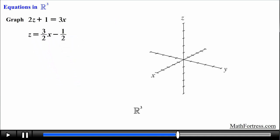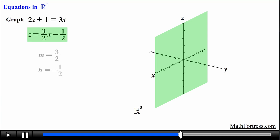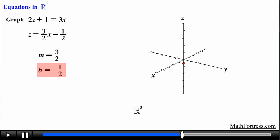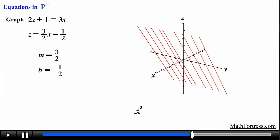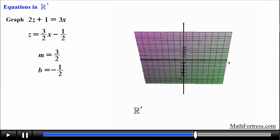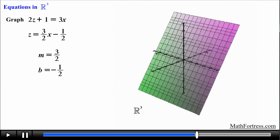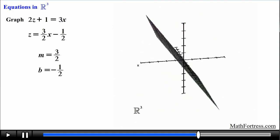Let's graph this equation directly in the 3-dimensional coordinate system. We first graph the curve on the xz plane. The z-intercept is negative one-half, so we plot that point first. The slope is positive three-halves, so from the z-intercept we move 3 units toward the positive z-axis and 2 units toward the positive x-axis, then connect the points. We then make copies of this curve at positive and negative values of y, since y is not expressed. Connecting all curves gives a plane with a z-intercept of negative one-half and slope of positive three-halves.